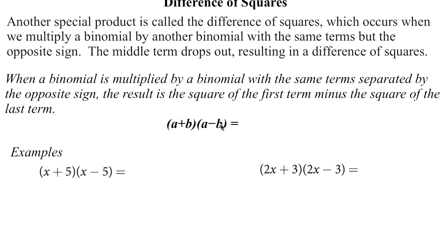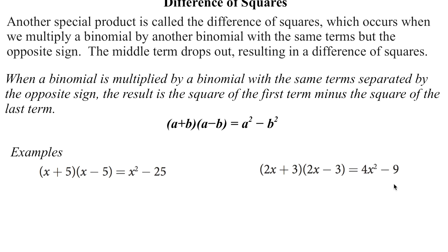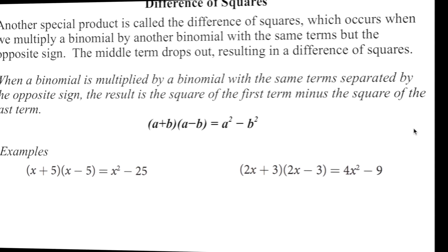Another special product is the difference of squares. When we multiply the difference of squares, you just multiply the first terms together and the last terms together — the outside and inside always drop out. So we end up with a squared minus b squared, which is why it's called a difference of two perfect squares. The first and last terms you end up with are perfect squares. Here's one: multiply the first terms to get x squared, multiply the last terms to get minus 25. On the right-hand side, multiplying the first terms gives 4x squared, and the last terms give minus 9. So it's always a difference of two perfect squares.